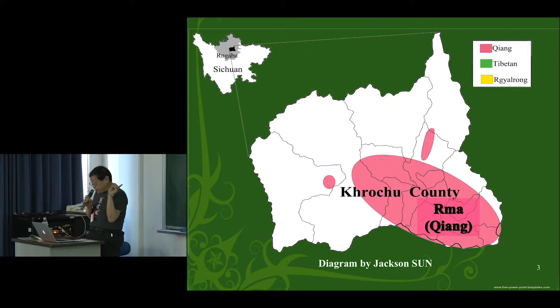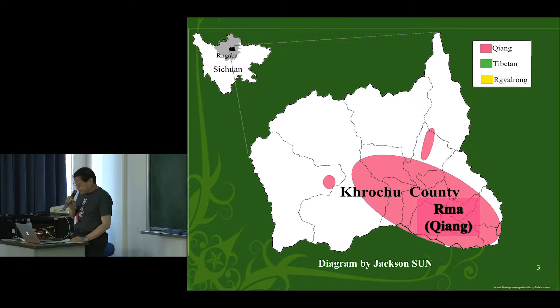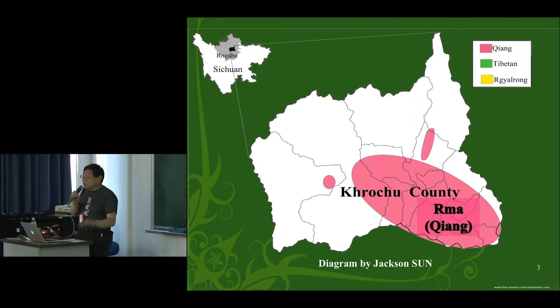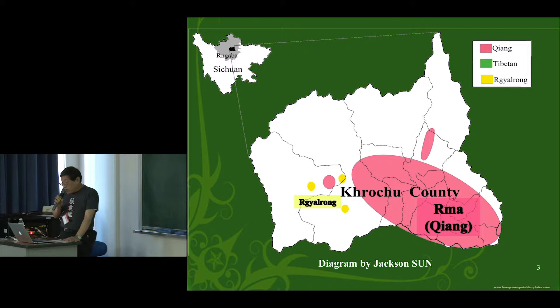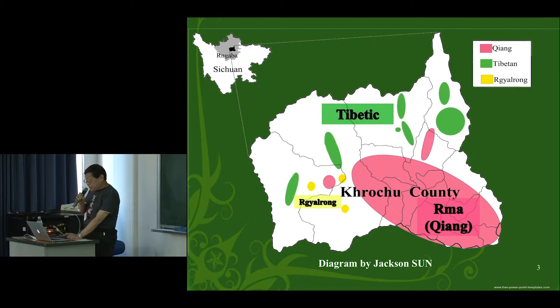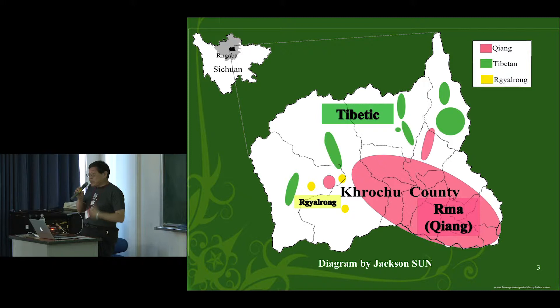I'll show these language groups on the map. The red or pink color area is the Rima-speaking area, where at least three or even four distinct languages are represented. The most prominent one is, of course, Northwestern Rima, including the prestigious Mawo dialect. The yellow color areas, spoken in three villages, are the Jiarong languages, representing two distinct dialects of eastern, or Situ Jiarong. To the north and west, the green spots are the areas where the Tibetan languages — or to be conservative, lects — are spoken.